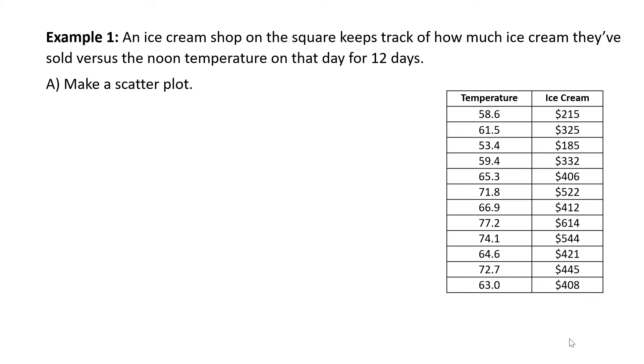First, consider the table that's provided. It has two columns. The left one is labeled temperature, and the right column is labeled ice cream. The first row following the titles, we see that for 58.6 degrees Fahrenheit, that ice cream shop sold $215 worth of ice cream. To make a scatter plot, we want a horizontal and a vertical axis. Notice that for the temperature, it varies from a low of 53.4 to a high of 77.2. Let's mark the tick marks at five degree intervals starting at 50, so we'll have 50, 55, 60, 65, 70, 75, and 80. Let's label the horizontal axis.